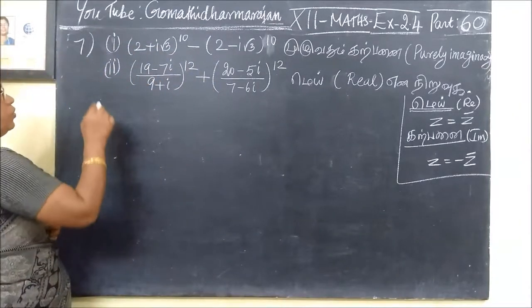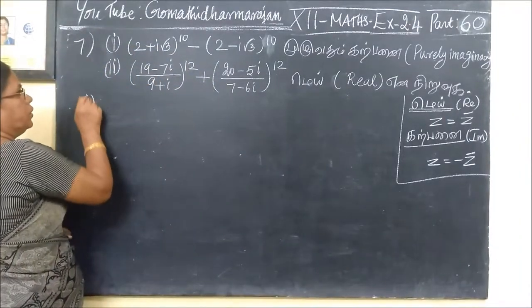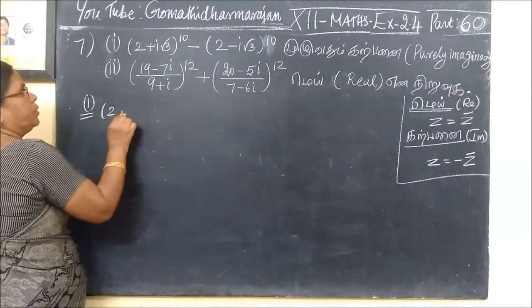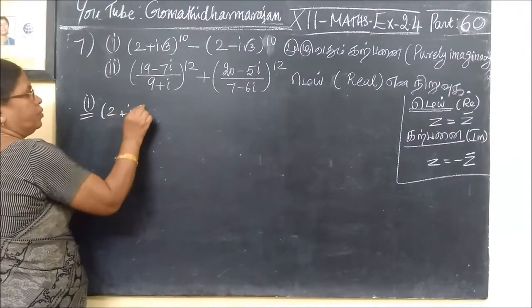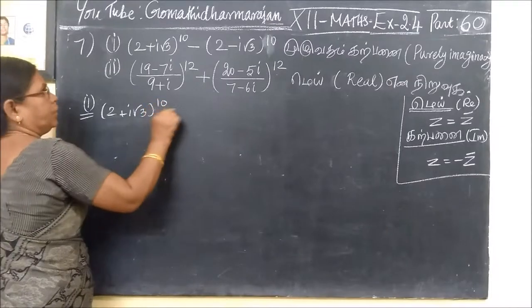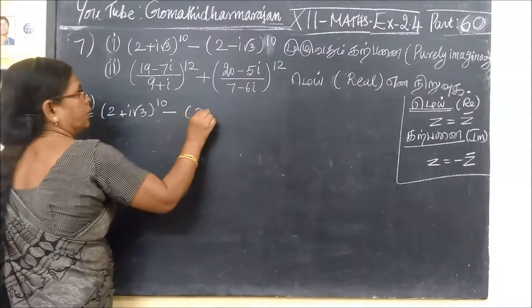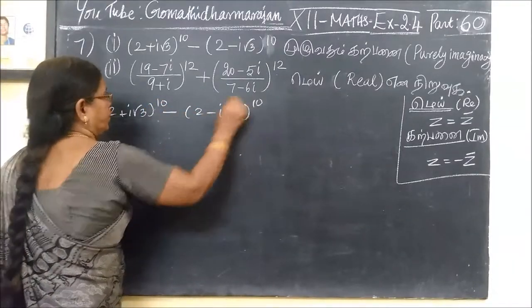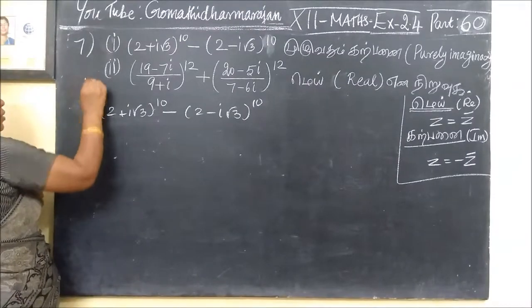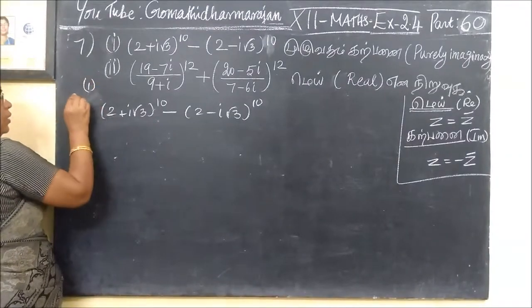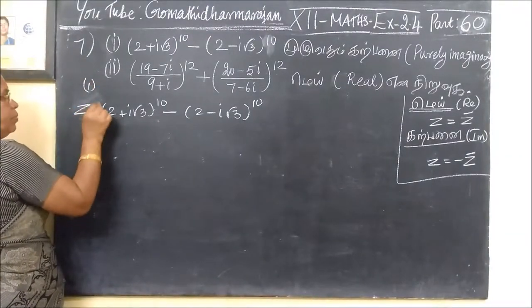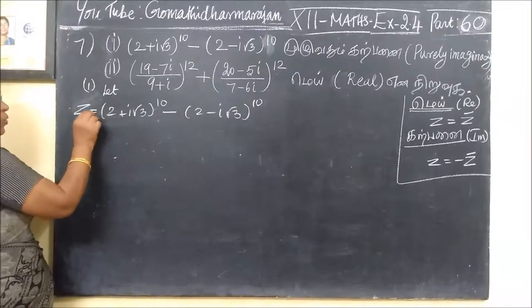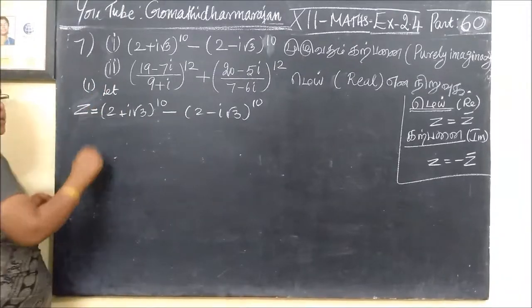Then question number 1 is added. We have: 2 plus i root 3, whole power 10, then 2 minus i root 3, whole power 10. Now we can use this. Real is Z equal to Z bar. The question is Z.